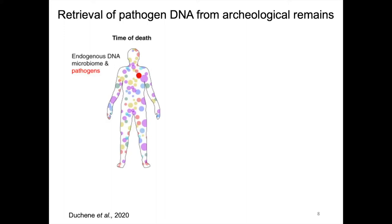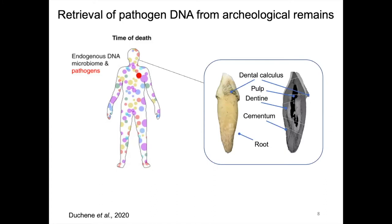Teeth are the preferred source for ancient pathogen DNA recovery. Here I show an image of an ancient incisor tooth and its cross-section view, with the main components of the tooth anatomy indicated. The pulp cavity is a connective soft tissue which is well protected from the outside and is characterized by an abundant vascular system and nerves. Therefore, microorganisms can penetrate and circulate in blood vessels and colonize the dental pulp.